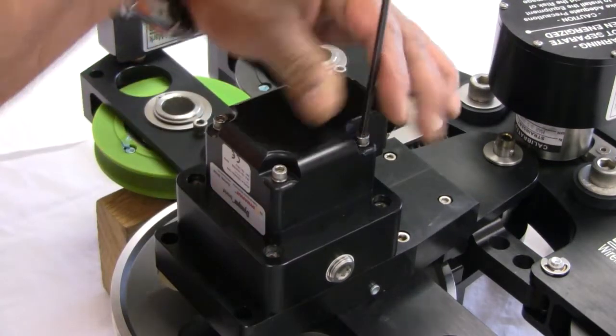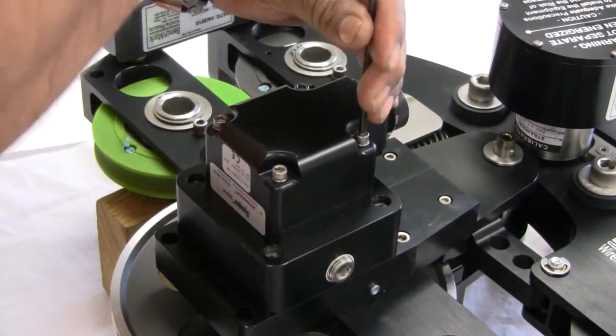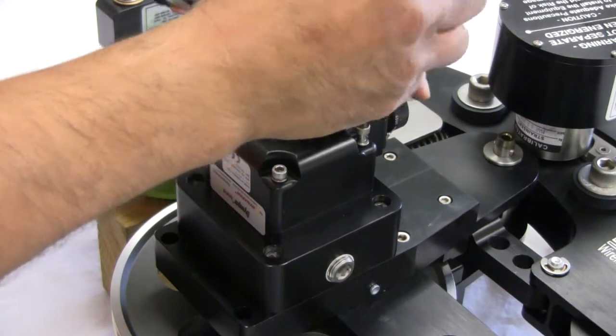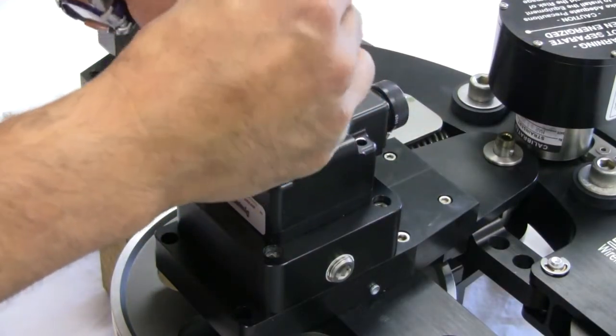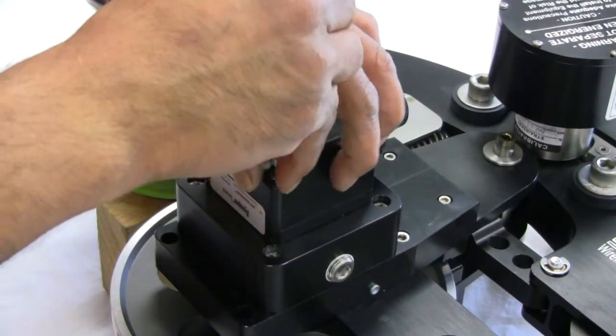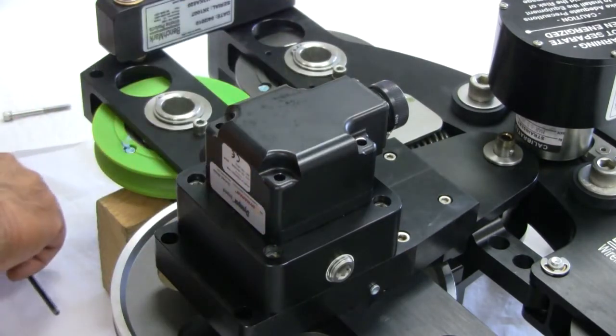Remove the four bolts that hold the encoder in place. Carefully remove the encoder, taking care not to jar the coupling stack.